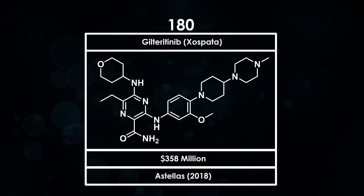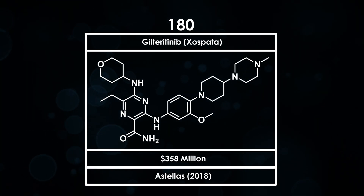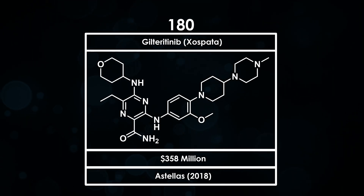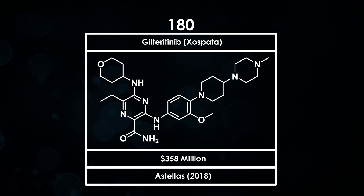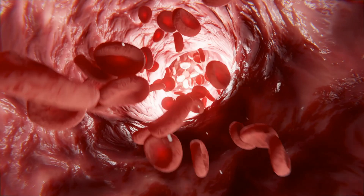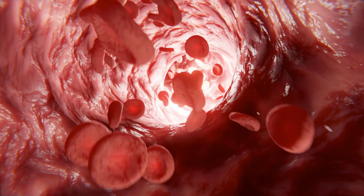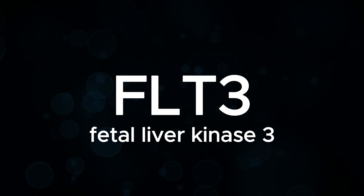Gilteritinib, sold under the brand name Xospata, was the 180th top-selling pharmaceutical by revenue in 2022. It is used for the treatment of relapsed or refractory acute myeloid leukemia, which is a type of blood cancer, specifically in patients with a mutation to the FLT3 gene.